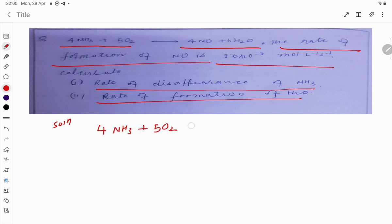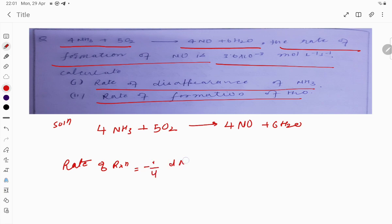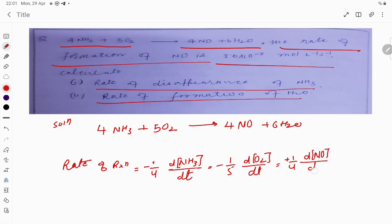The stoichiometric reaction is: 4NH₃ + 5O₂ → 4NO + 6H₂O. The rate of reaction can be written as: minus 1/4 × d[NH₃]/dt = minus 1/5 × d[O₂]/dt = plus 1/4 × d[NO]/dt = 1/6 × d[H₂O]/dt.